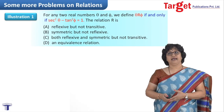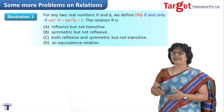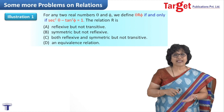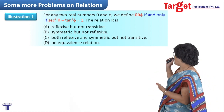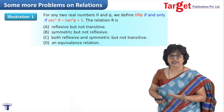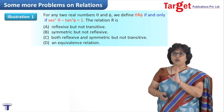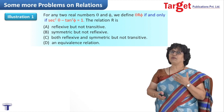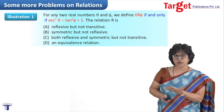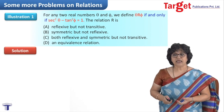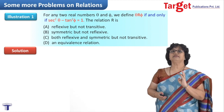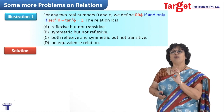The first problem is: for any two real numbers theta and phi, theta is related to phi if and only if sec² theta minus tan² phi equals 1. We have four options regarding relation R. When you look at the problem, it is in terms of sec and tan, so basic trigonometry is needed to handle this question.